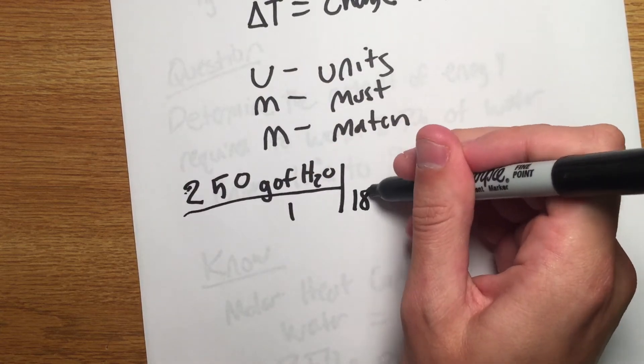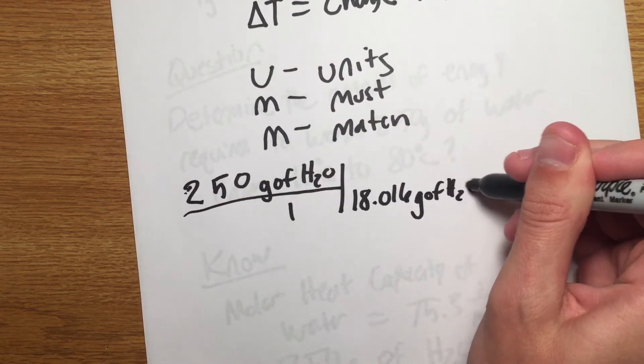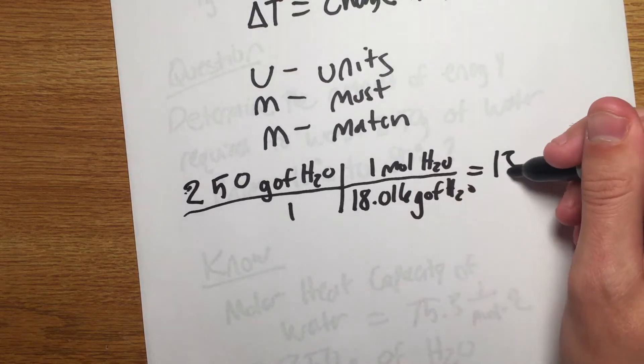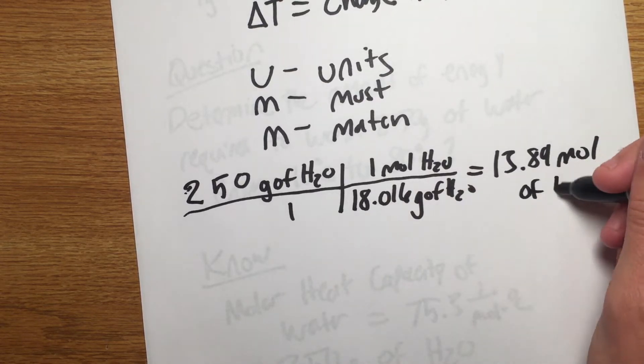We do this by dividing the mass of water by the molar mass of water which is 18.016 grams per mole. This gives us 13.89 moles of water.